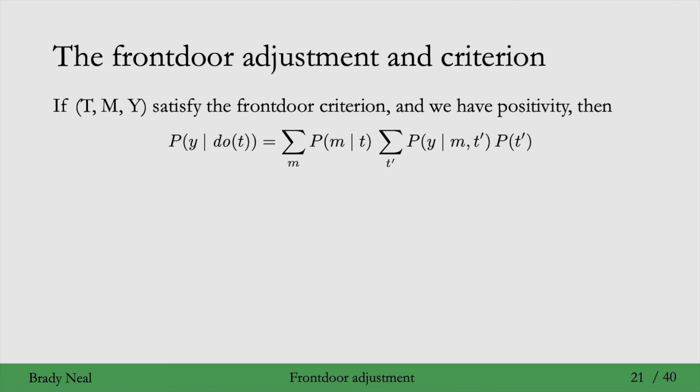So the front door adjustment is that if we have that T, M, and Y satisfy the front door criterion, and we have positivity, then we have this identification equation here. And what is the front door criterion?